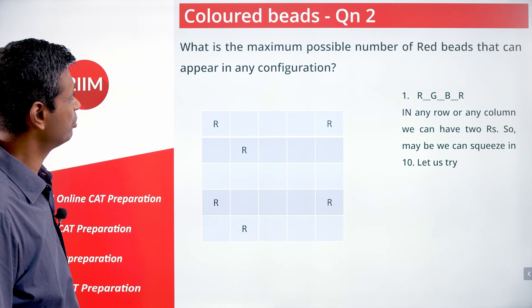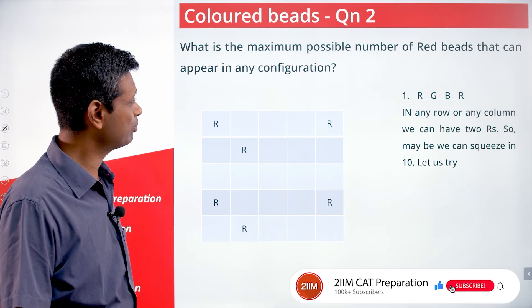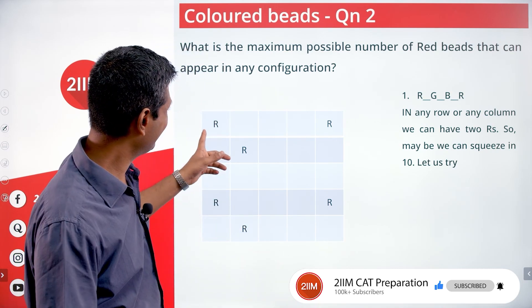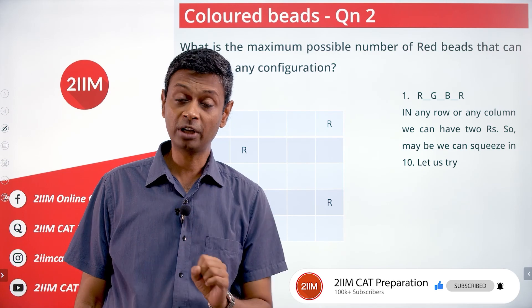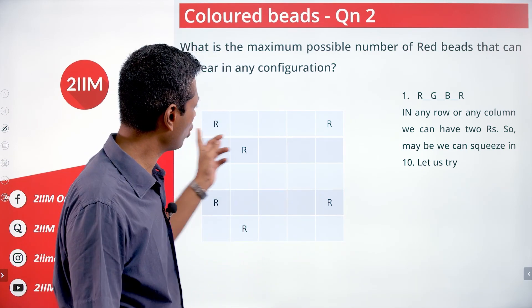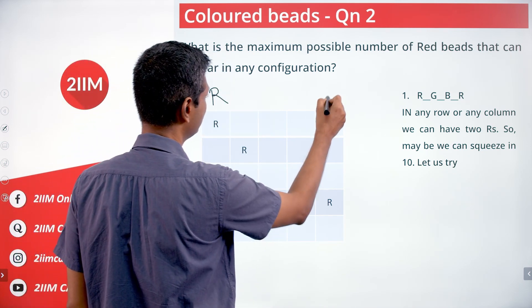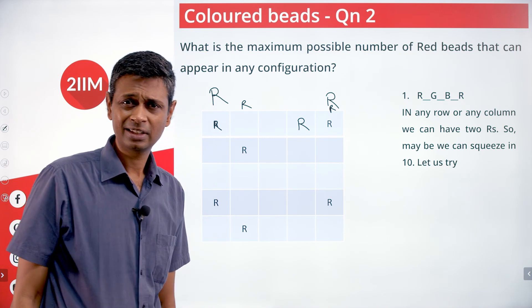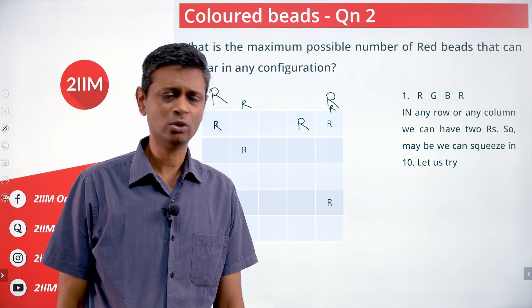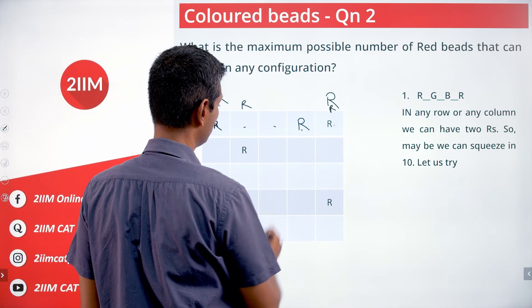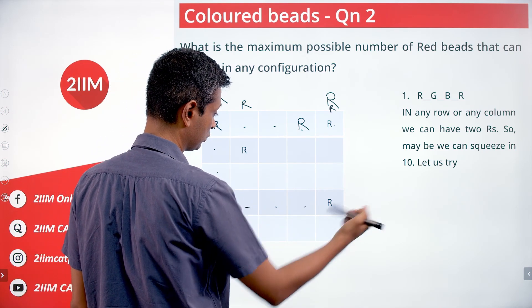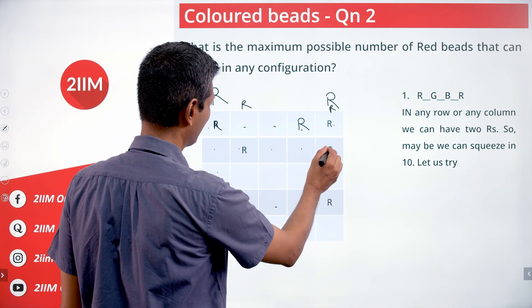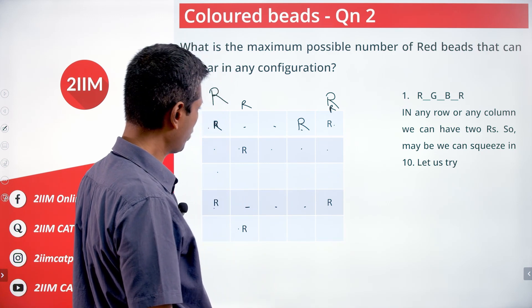What is the maximum possible number of red beads in any configuration? To maximize reds, we'll likely need two reds per row or column. If there are two reds in a row, they require at least a blue and a green in between — meaning at least two cells gap. So in a row of 5, valid positions for two reds are: positions 1 and 4, positions 1 and 5, or positions 2 and 5.